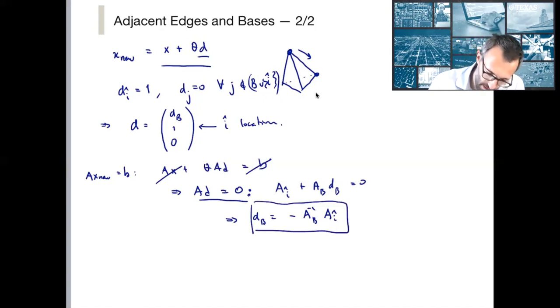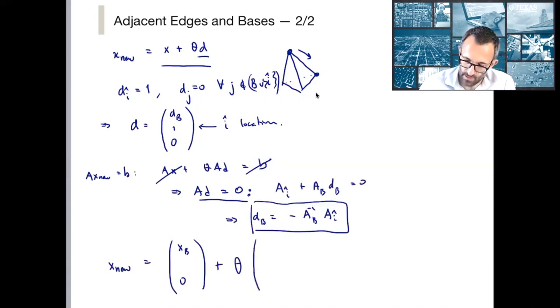So DB is equal to minus AB inverse times A i hat. So that means that X new is equal to X B zero plus theta times DB. We have that sitting right there minus AB inverse A i hat. One, which is that i hat element and then zero, everything else. So we have to determine what theta is.